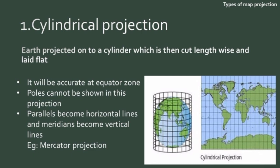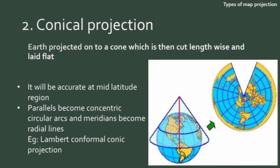As you can see from the image, parallels — latitude lines of equal value — become horizontal lines, and meridians — lines of equal longitude — become vertical lines after projection. In conical projection, the earth is projected onto a cone which is then cut lengthwise and laid flat. It is accurate at mid-latitude regions like North America, China and Russia. Parallels become concentric circular arcs and meridians become radial lines, as is evident from the picture.